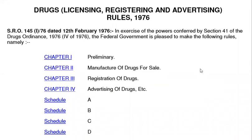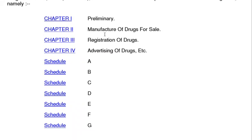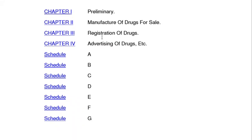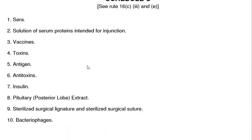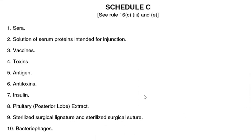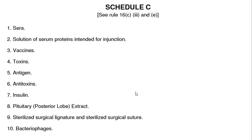Assalamualaikum guys, welcome back. After Pharmacist Mariam, we studied Drug License and Registration and Advertisements Rules 1976. We covered Chapter One: Preliminary, Chapter Two: Manufacturing of Drug License, Chapter Three: Registration of the Drug, Chapter Four: Advertisements, Schedule A, Schedule B. Now we will study Schedules B, E, F, and C. Let's go without any delay. Please subscribe to this channel, Pharmacist Mariam, share this lecture, and ask questions in the comment section.